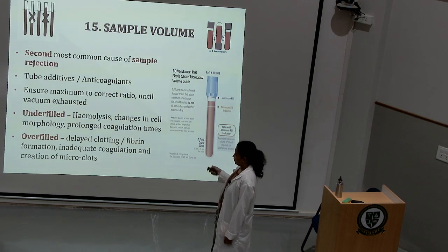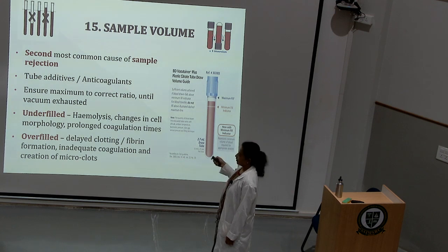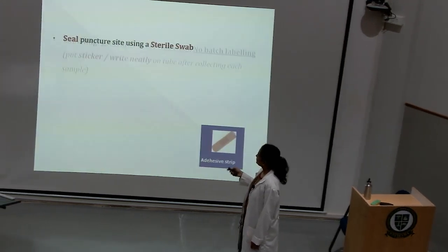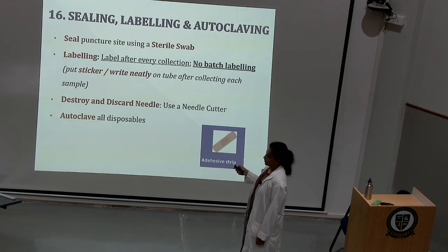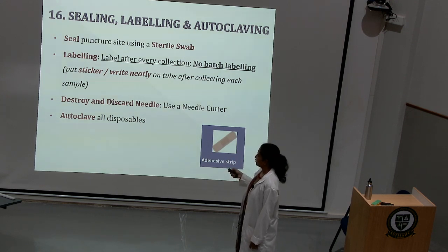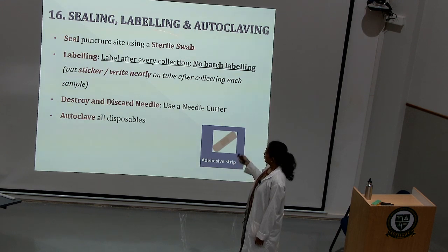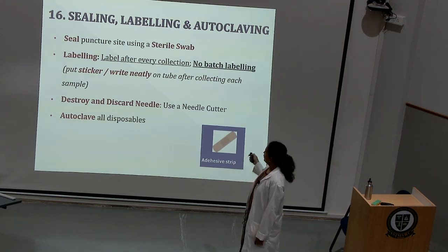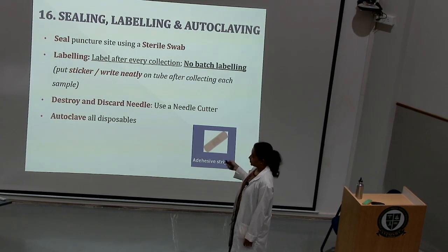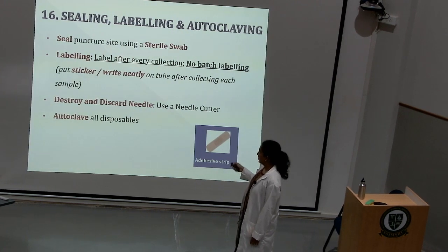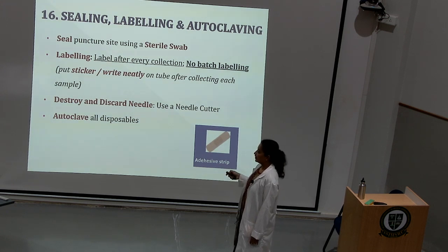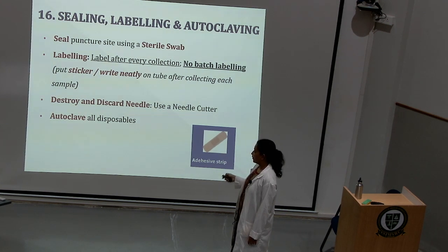Once you load the vacutainer or collection tube with blood, invert it vertically upwards and then downwards. Properly seal the puncture site using a sterile swab. Labeling is very important — label after every collection; no batch labeling is allowed to avoid confusion and mistakes. Put the sticker neatly on the tube after collecting the sample. The needle used for collecting must be destroyed and discarded using a needle cutter, and all disposables must be autoclaved.